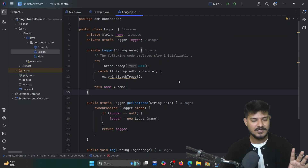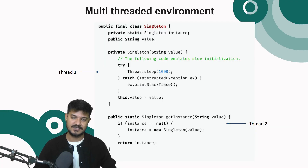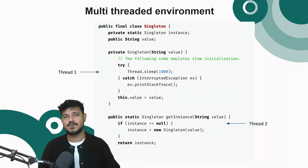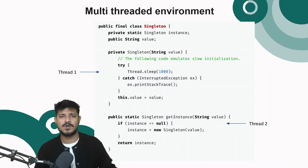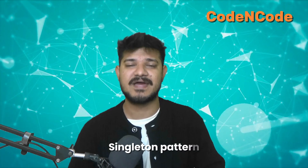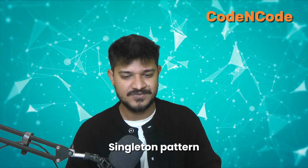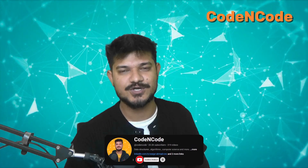This works well in situations where you really want to make sure that only one instance of a class is created. That's all about the singleton pattern and how to implement it. Thanks for watching, and until the next video, keep coding!